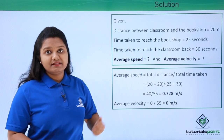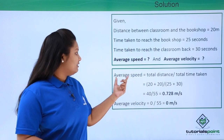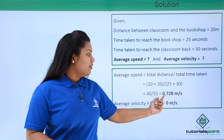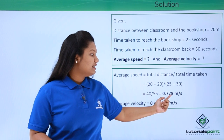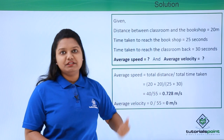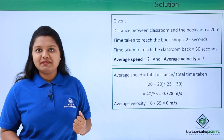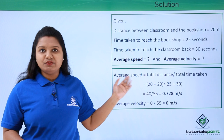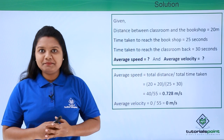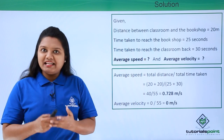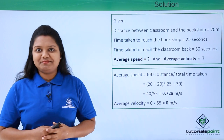Even though the boy traveled a distance with an average speed of 0.728 meters per second, his average velocity is 0. I hope you have understood the solution of this problem. Thanks for watching.